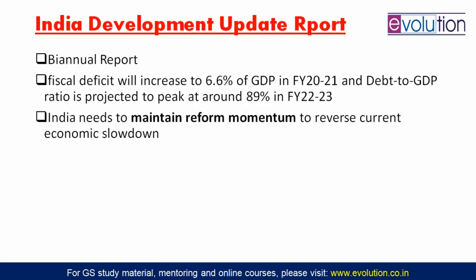A small but important news item comes from the India Development Update Report, released by the World Bank. The nature of this report is biannual — meaning two times in one year. Biennial means once in two years, whereas biannual means twice in a year. So this India Development Update Report by the World Bank is released biannually — two times in one year.